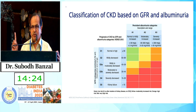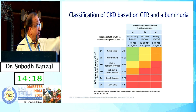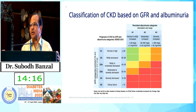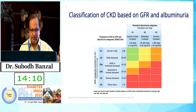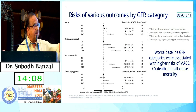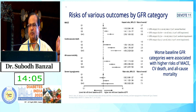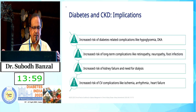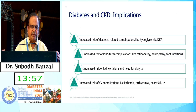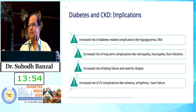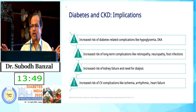We must monitor albumin levels — whether the patient has microalbuminuria or macroalbuminuria — as albumin level determines the risk of developing ESRD early. Various risk factors, low GFR, and cardiovascular morbidity and mortality must all be considered. DKD and diabetes implications are important; we have to manage hyperglycemia and also look for other complications.